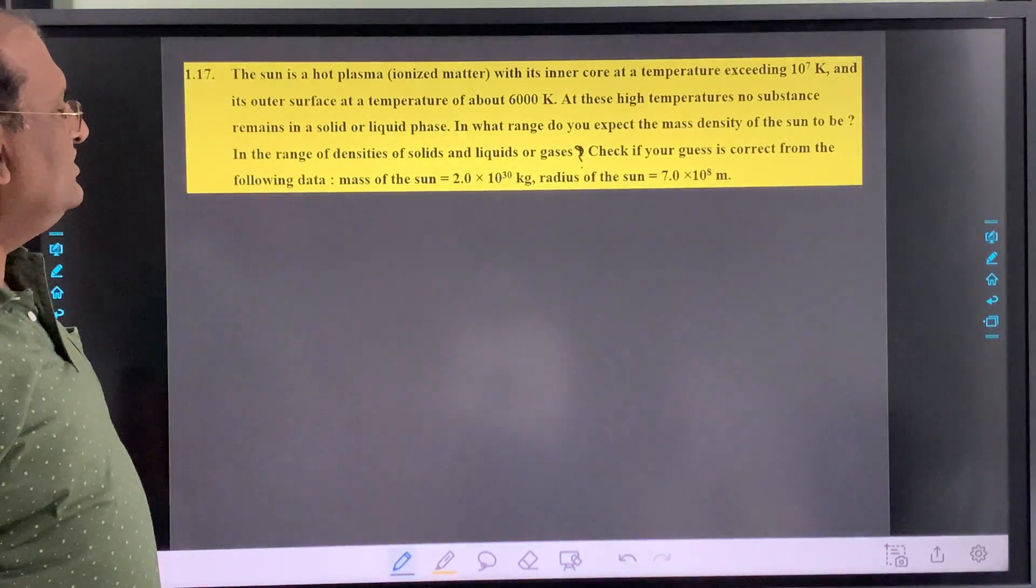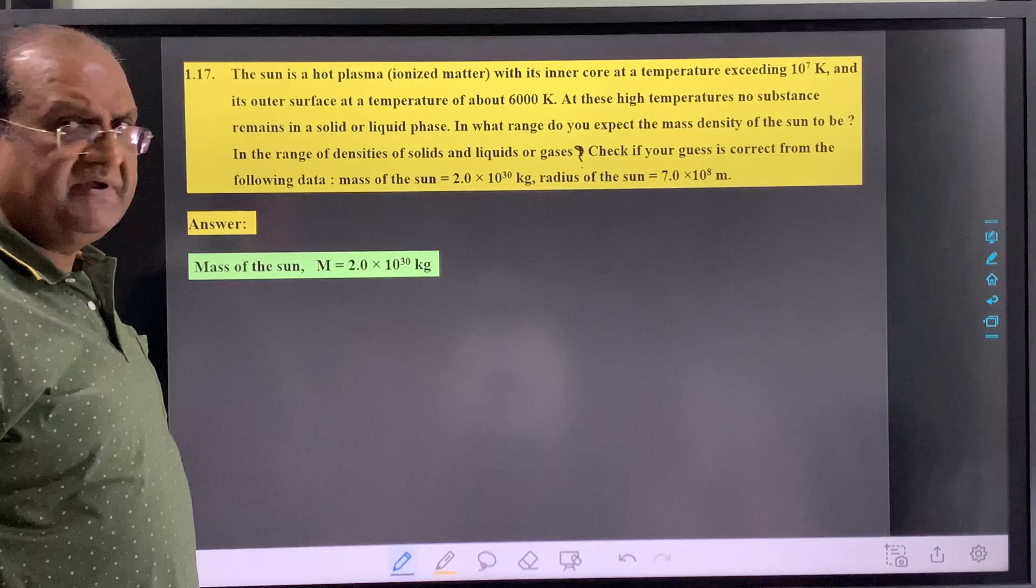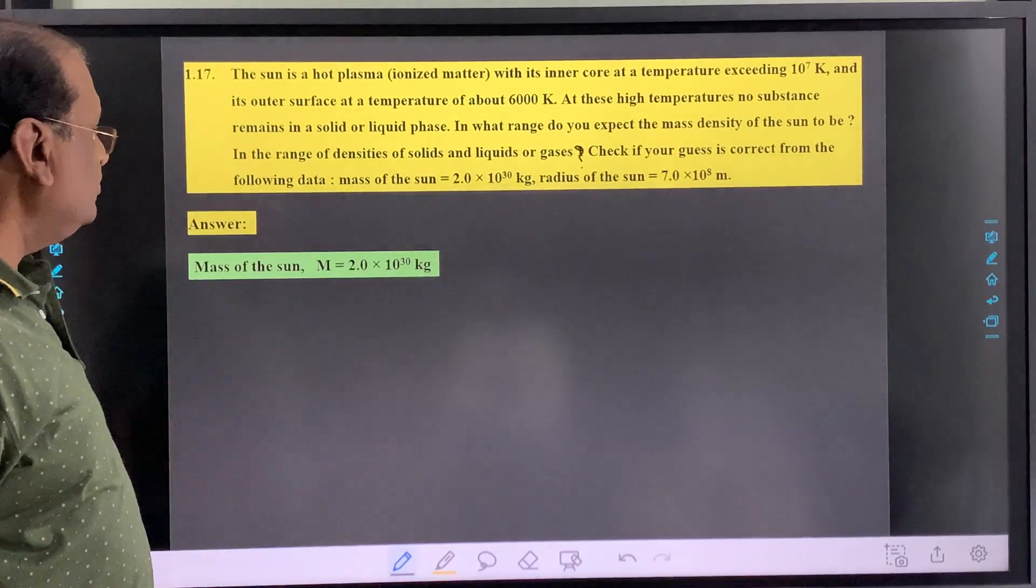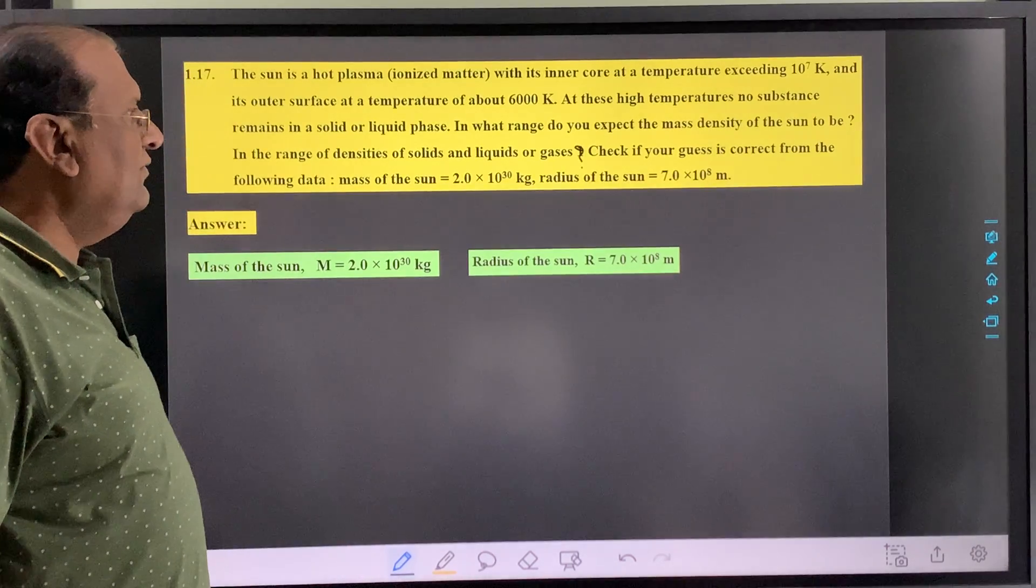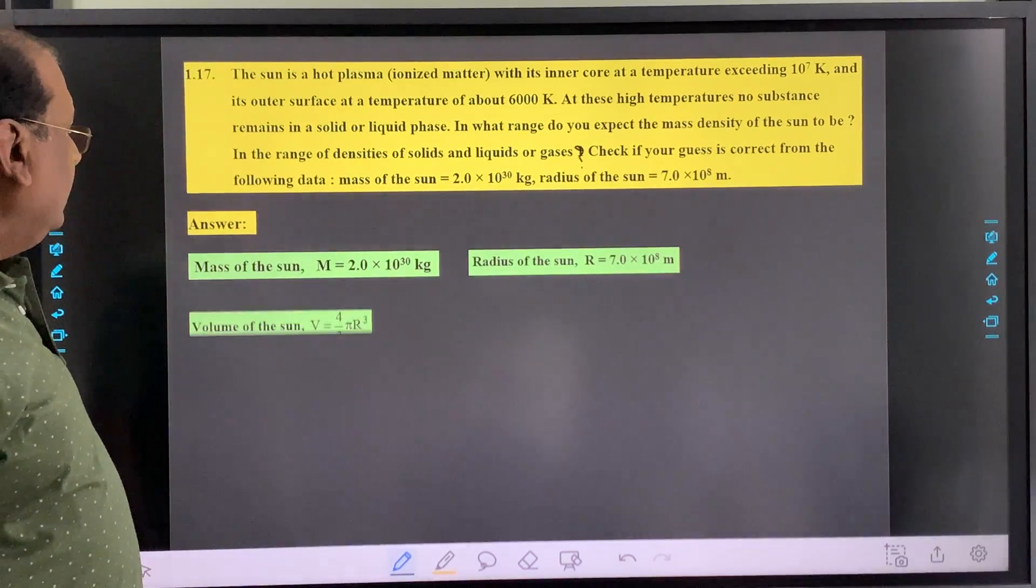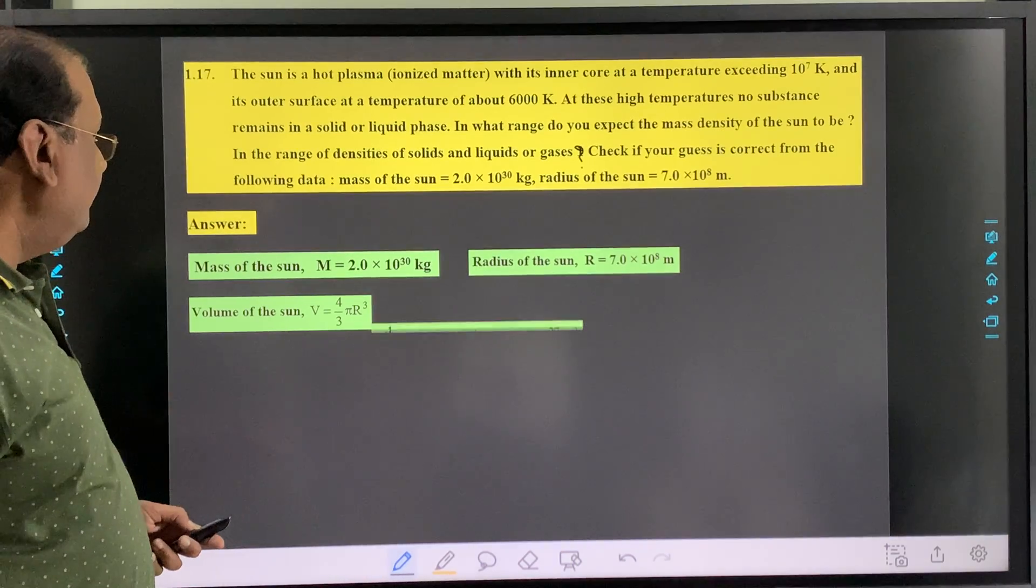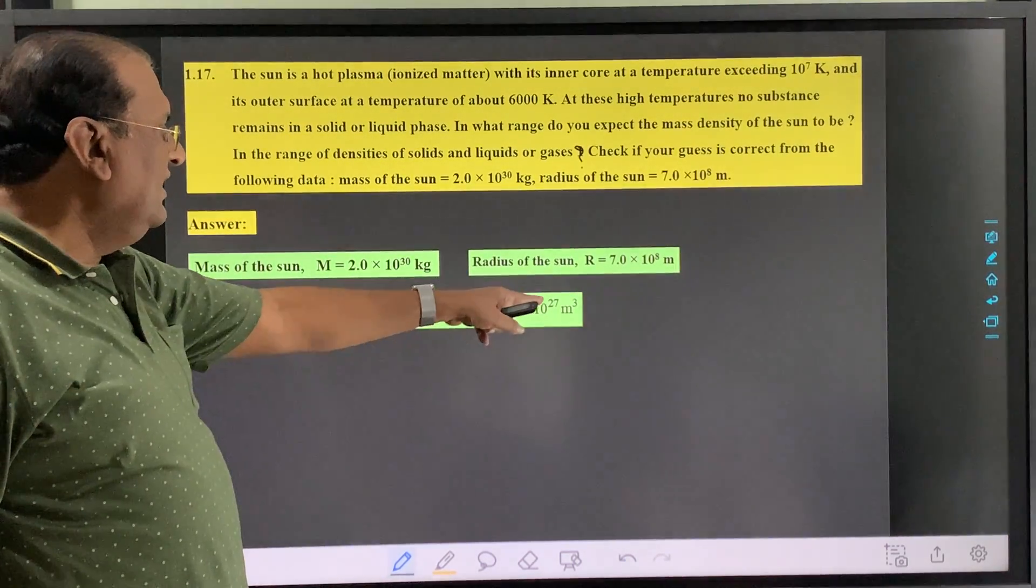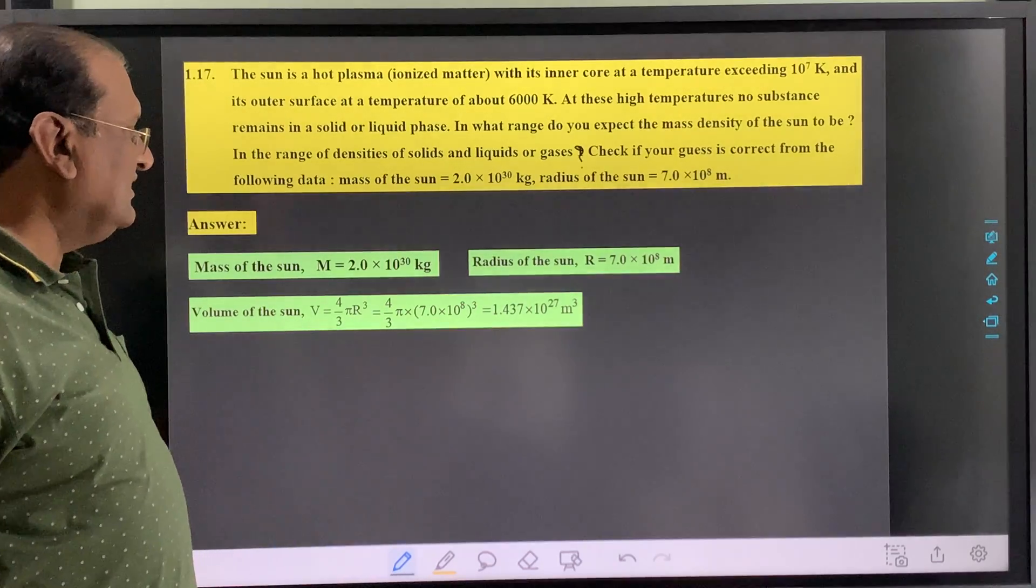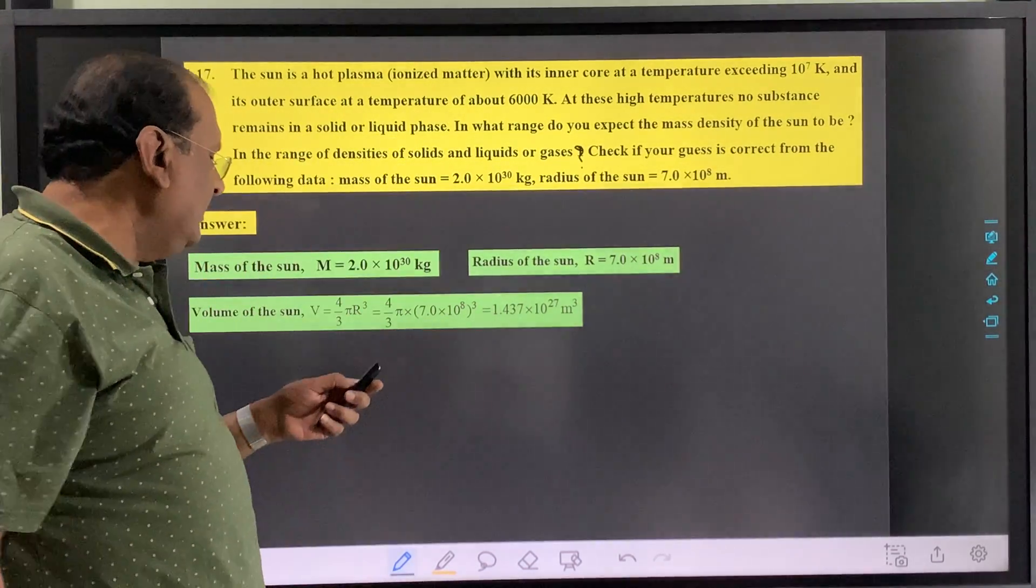So calculations are very simple. Mass of the sun given to you: 2×10^30 kilograms. Radius of the sun: 7×10^8 meters. Now volume, that is 4/3 πr³. So 4/3 πr³ calculated, you will get the answer 1.437×10^27 cubic meters.